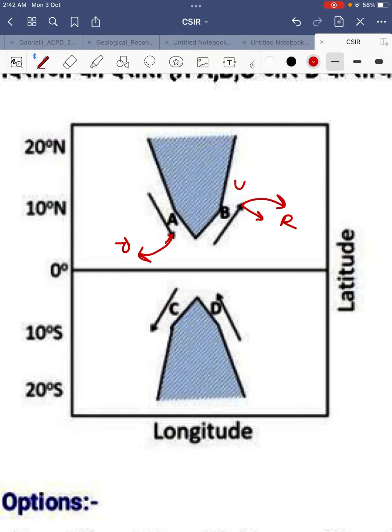Here, this is the southern hemisphere. In southern hemisphere, Coriolis force acts left. So for this, left is this one, for this, left is this one. And when a wind or current moves towards the coast, that means there is downwelling.